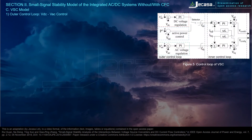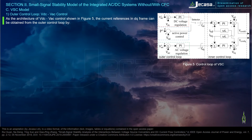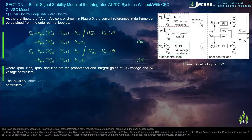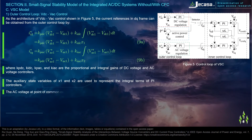Outer control loop 1 — VDC/VAC control: as shown in Figure 5, the current references in the DQ frame are obtained from the outer control loop, where Kpdc, Kidc, Kpac, and Kiac are the proportional and integral gains of the DC voltage and AC voltage controllers. Auxiliary state variables x1 and x2 represent the integral terms of the PI controllers. The AC voltage at the point of common coupling, Vdc1, can be represented accordingly.